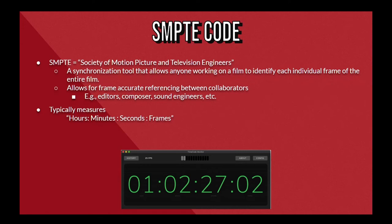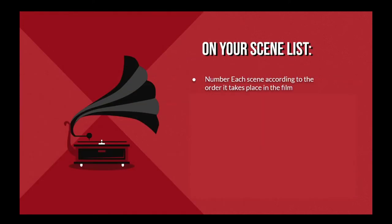While creating your master list, make sure to number each scene according to the order in which they occur during the film. Then make note of the SMPTE codes for when each scene starts and ends, as well as brief answers to each of the following questions: What do the primary characters of this scene want?